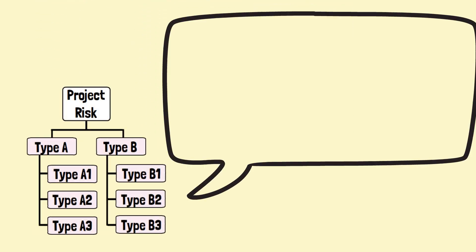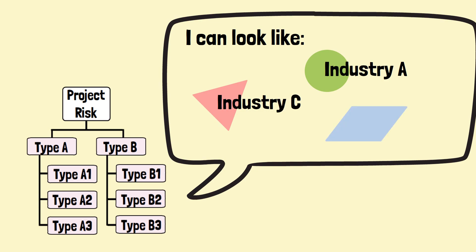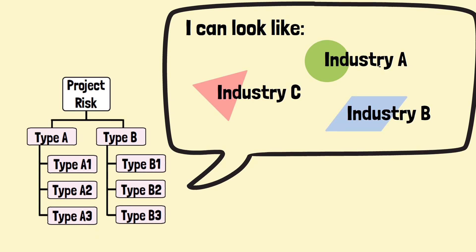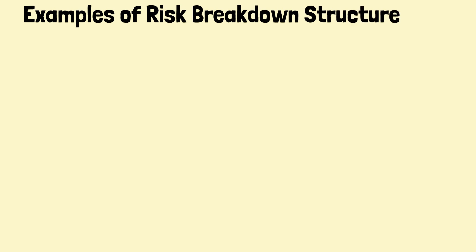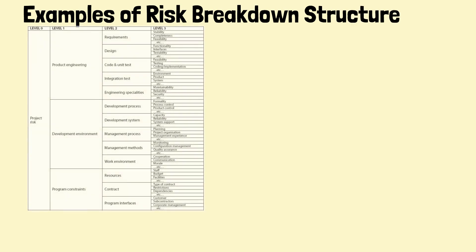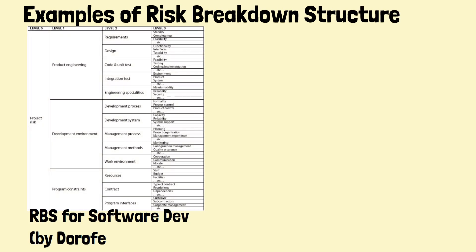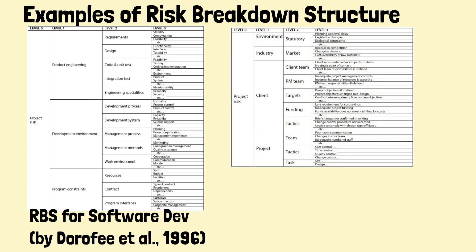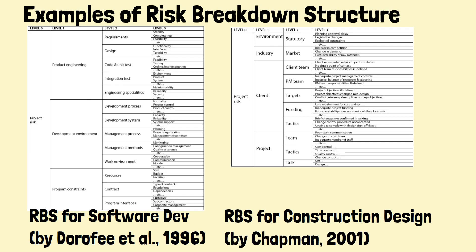A risk breakdown structure can take different forms depending on the industry, and there have been attempts to develop RBSs for different industries. For example, an RBS for software development was developed by Dorothy, and another example is an RBS for construction design risks by Chapman.